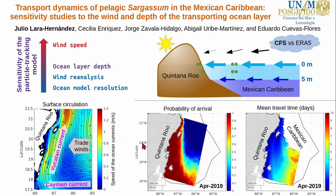Regarding the transport dynamics of the sargassum, the sargassum observed in the southwestern Mexican Caribbean and closer to the shore resulted more likely to run aground, usually in less than 3 days.